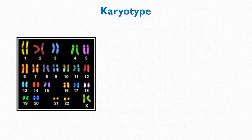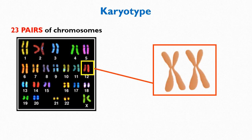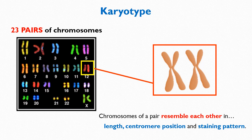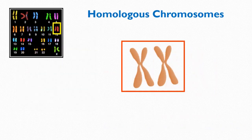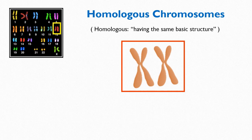In a karyotype, you can see that there are 23 pairs of chromosomes. Each pair contains two chromosomes that resemble each other in length, centromere position, and staining pattern. The members of a chromosome pair are called homologous chromosomes or homologs. The term homologous means having the same basic structure.